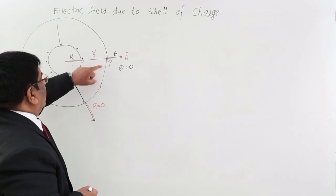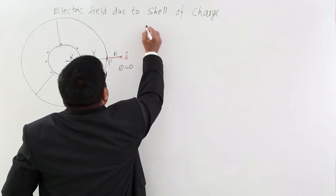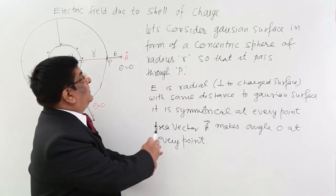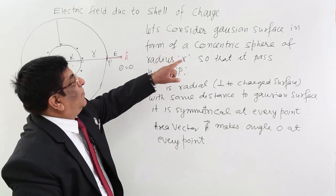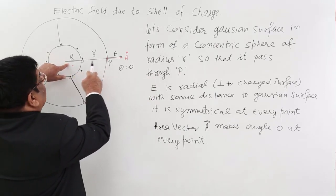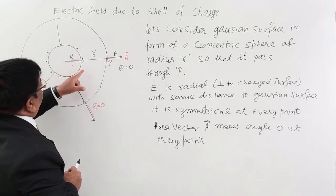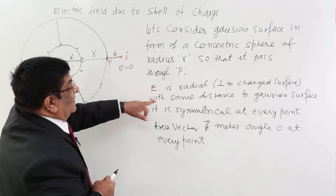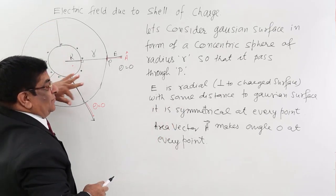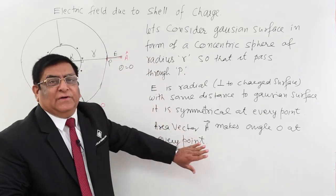Let us consider a Gaussian surface in the form of a concentric sphere with the same center, of radius small r, so that it passes through point P. E is radially perpendicular to the charge surface — so it is radially outward. With the same distance to the Gaussian surface everywhere, the distance is the same, so it is symmetric at every point. The area vector makes angle 0 at every point. This is our description of the Gaussian surface.